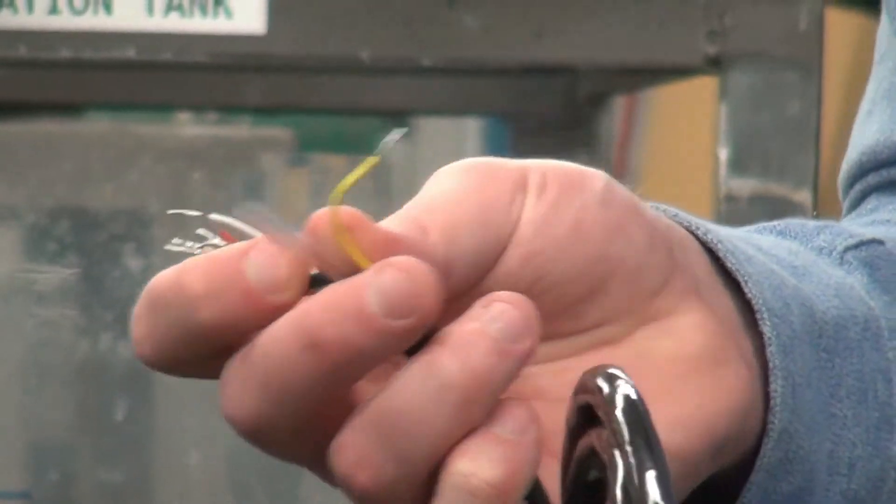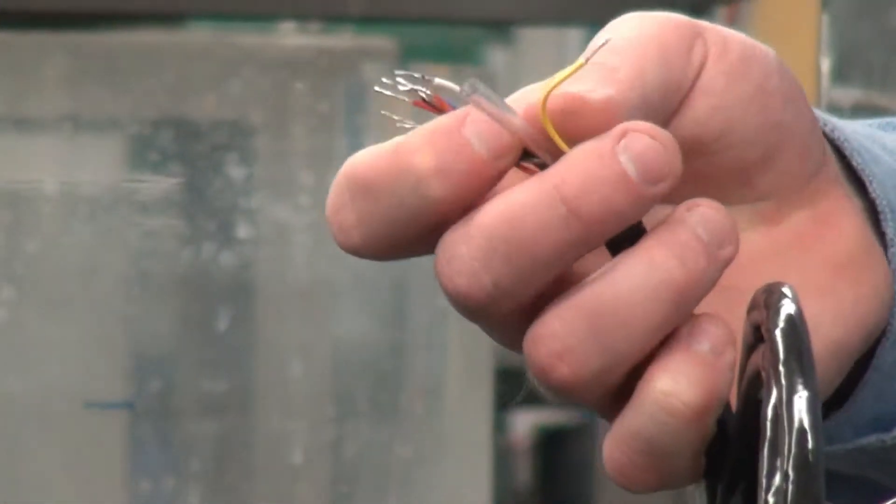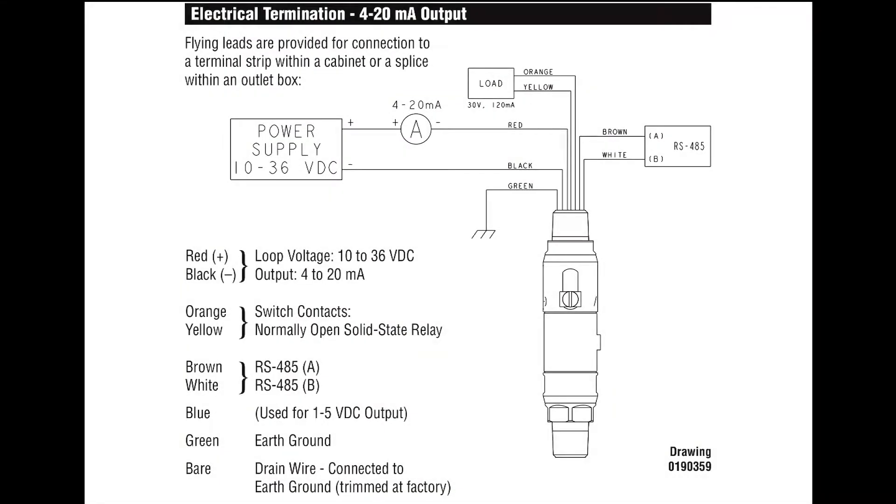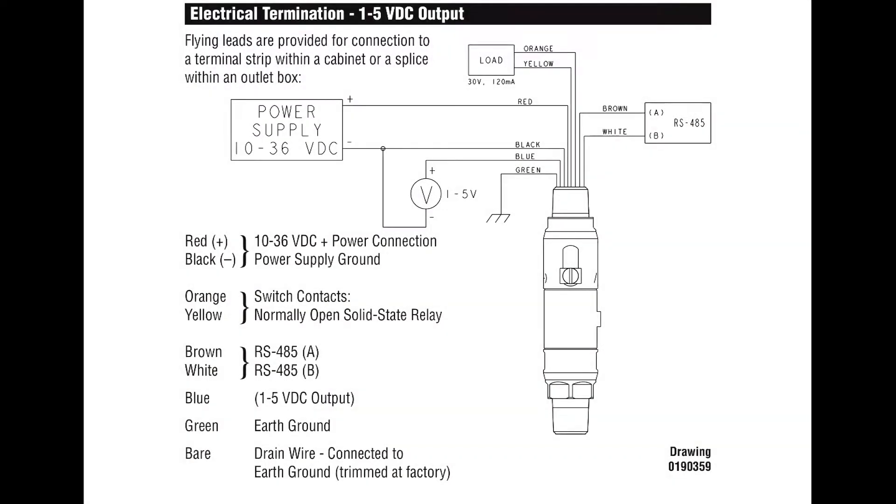The 815LT comes with eight separate wires. How you wire it actually determines how you use it. If you want to use a 4 to 20 milliamp output signal as well as a HART output, it is just a matter of which wires you choose to use at the time.